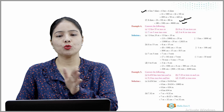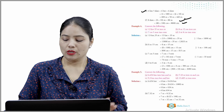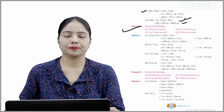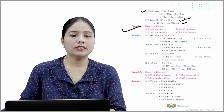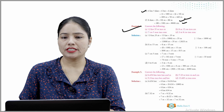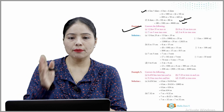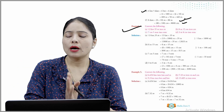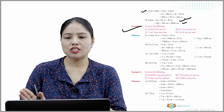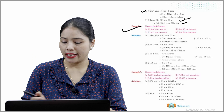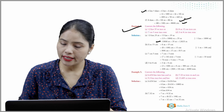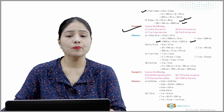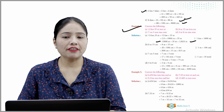Example 4 — convert the following. Part A: 13 km 35 meters into meters. Convert km to meters: 13 km = 13,000 meters (multiply by 1000), then add the 35 meters already given. So the answer is 13,035 meters. Part B: 8 meters = 800 centimeters. Since 1 meter = 100 centimeters, 8 meters gives 800, plus the 15 cm already given = 815 centimeters.